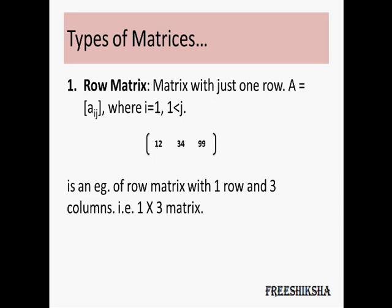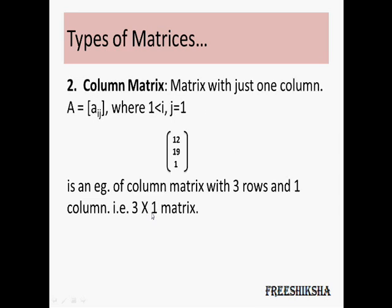A row matrix is a matrix with just one row. If you represent a matrix A by aij, for a row matrix your i will always be equal to 1 and your j will always be greater than 1. So you can have only one row while your j could be anything, meaning you can have multiple columns. An example could be a 1×3 matrix where you have 1 row and 3 columns.